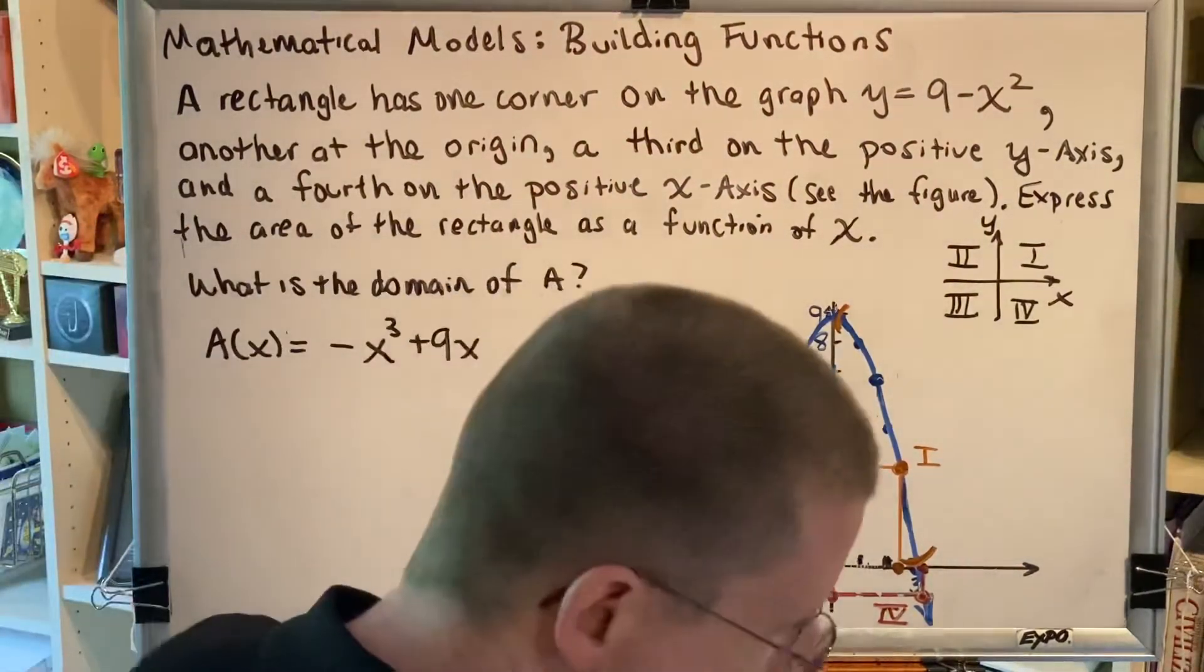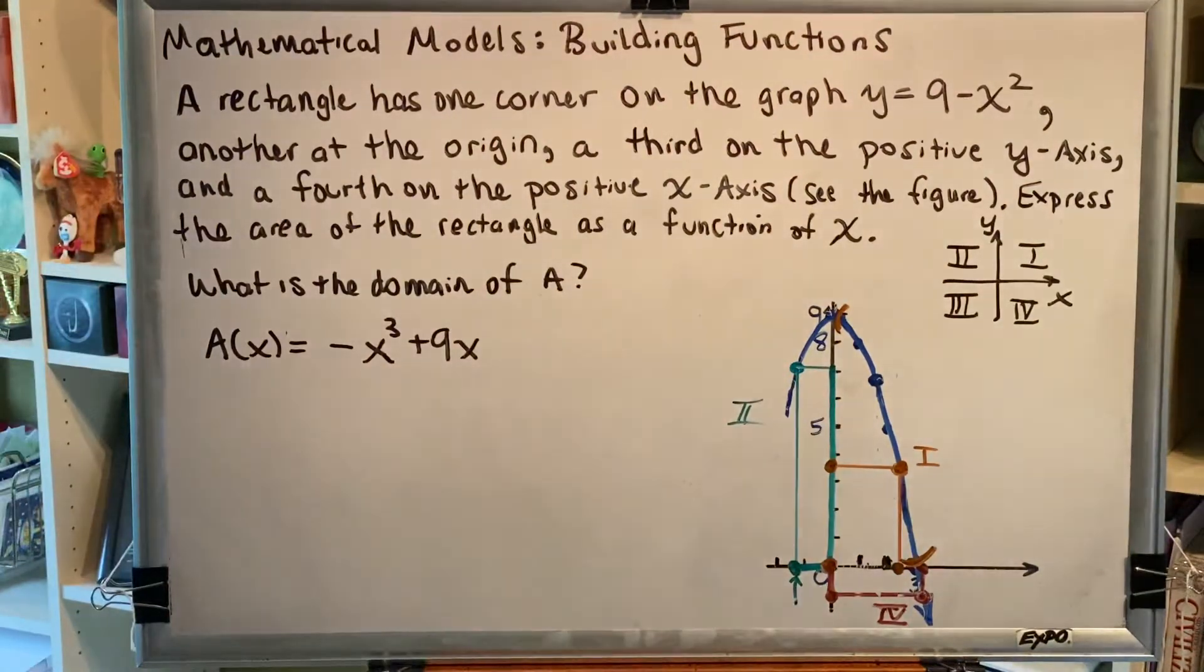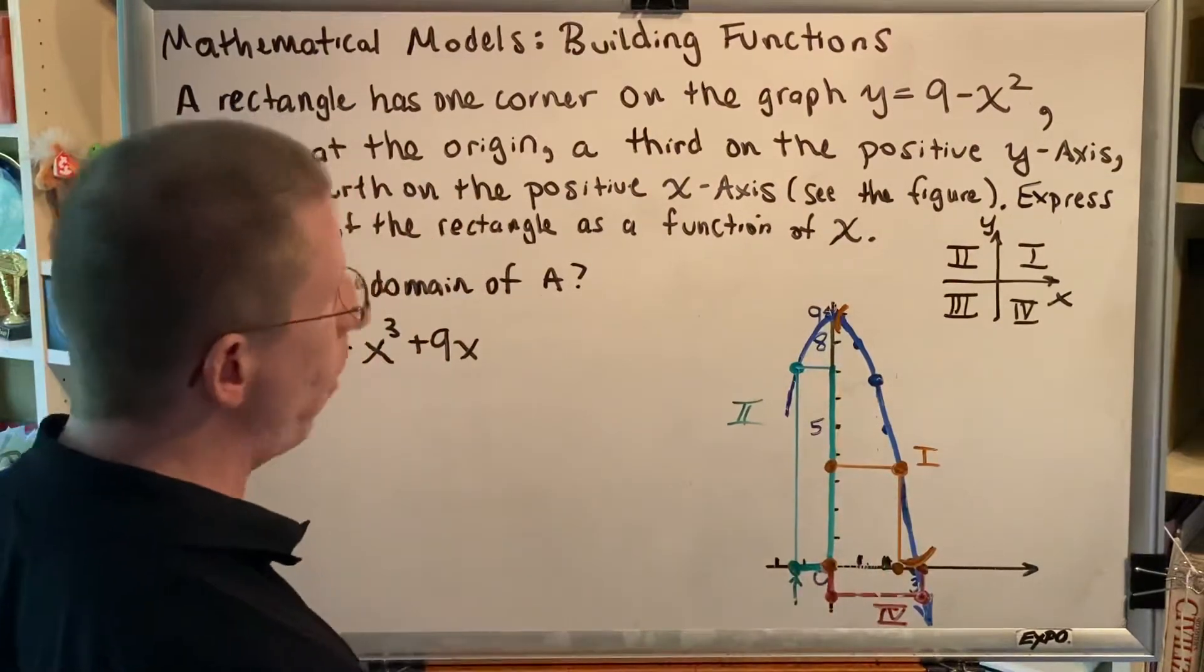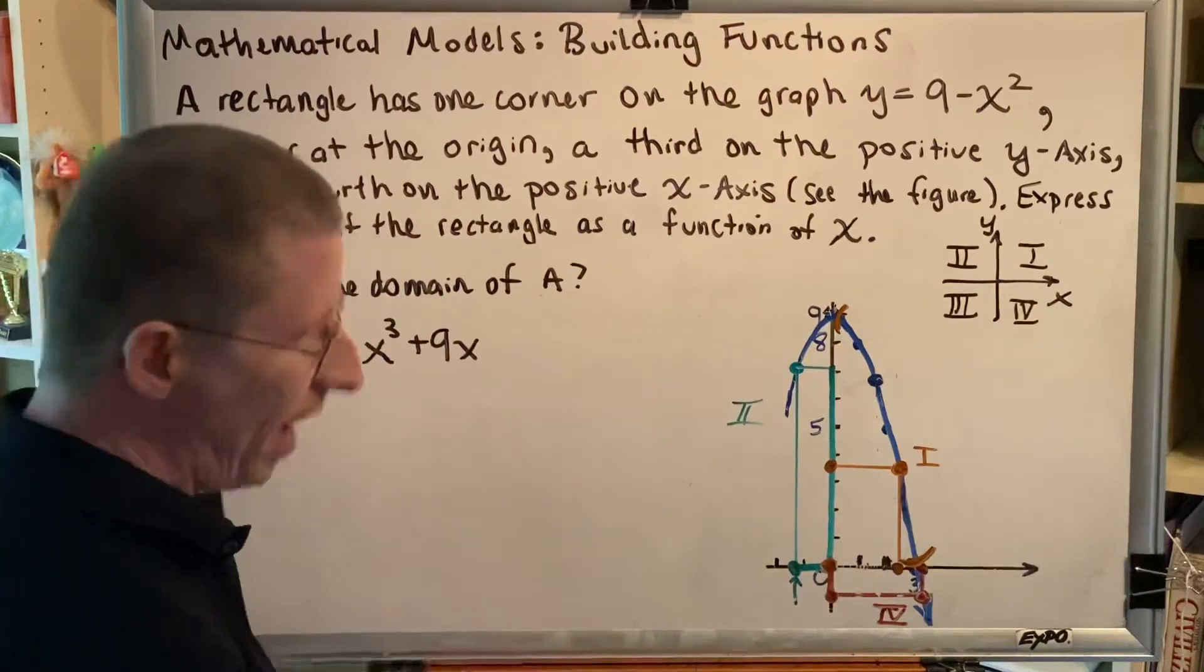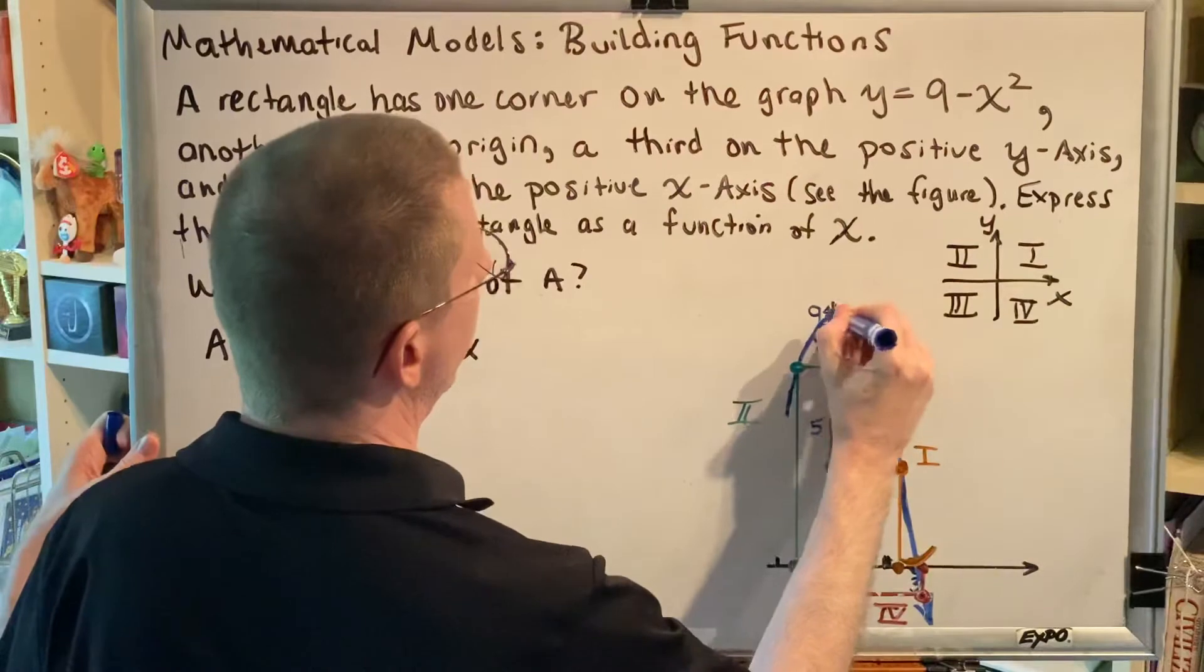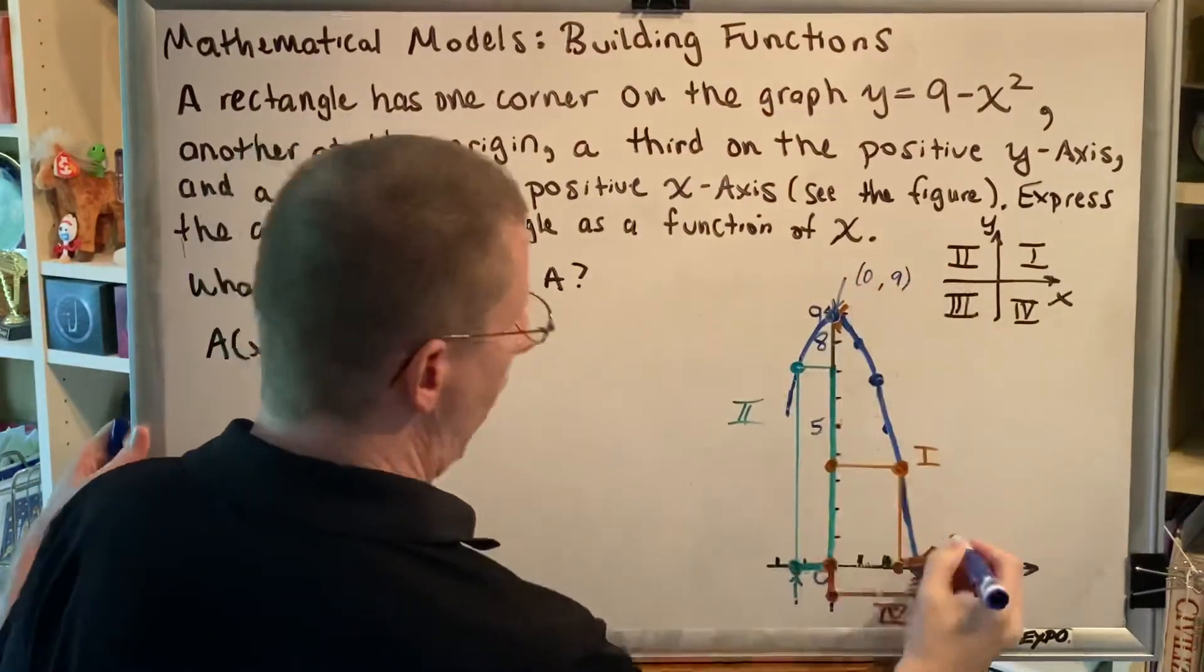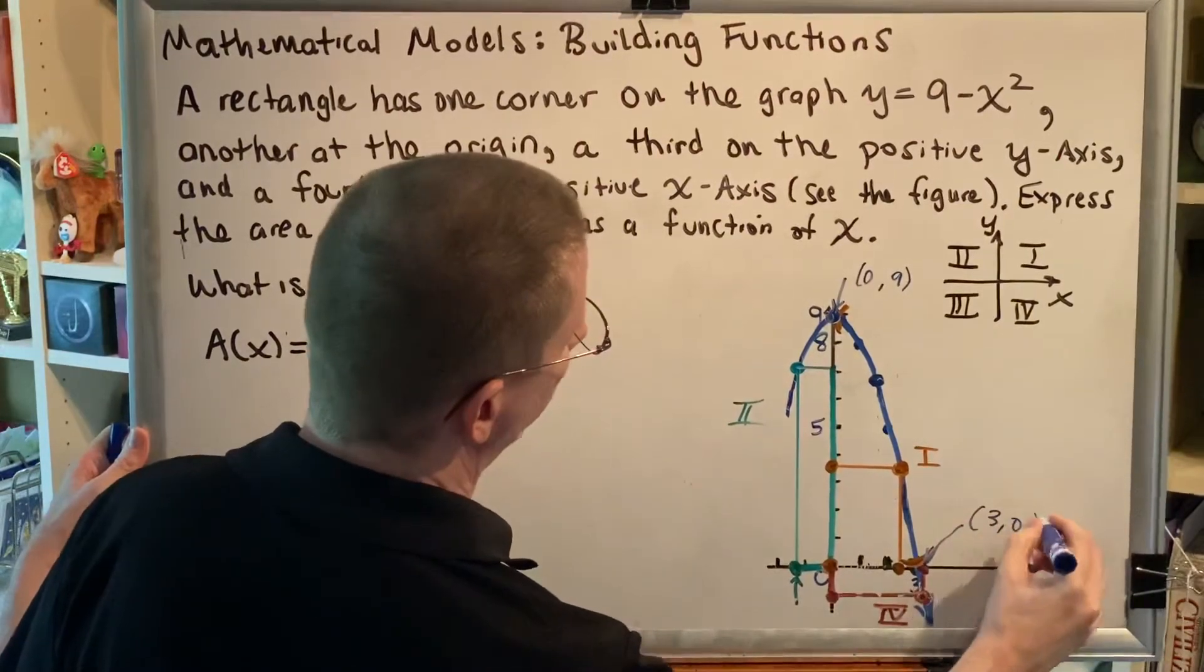With this discussion, we now have everything we need in order to answer the question: what is the domain? We know that the upper right-hand corner of the rectangle has to be somewhere in between this and that. And if we were to write down the actual locations of this point right here, that would be (0, 9). And the location of this down here would be (3, 0).